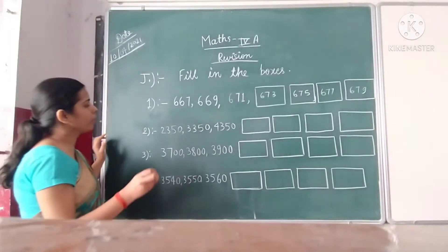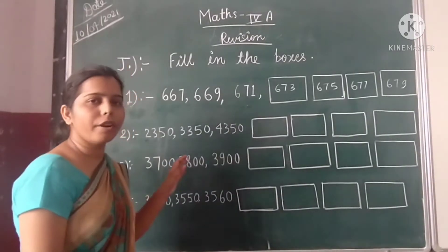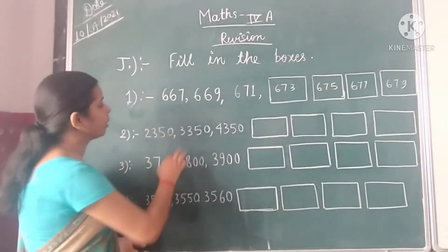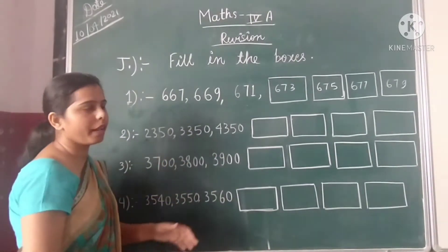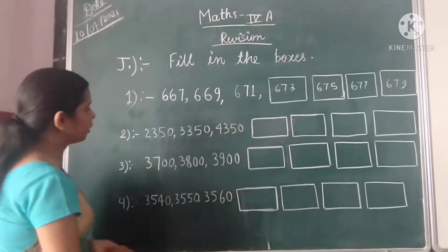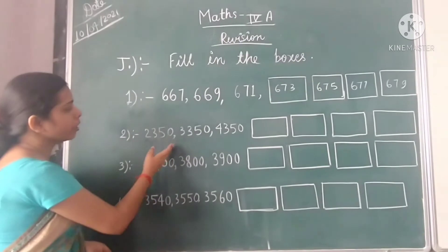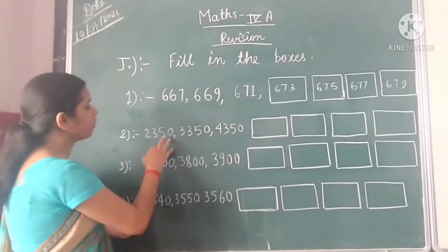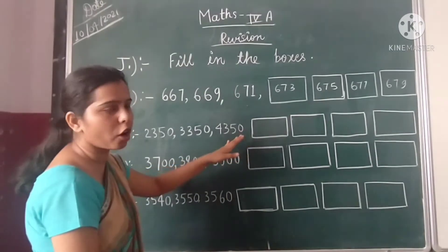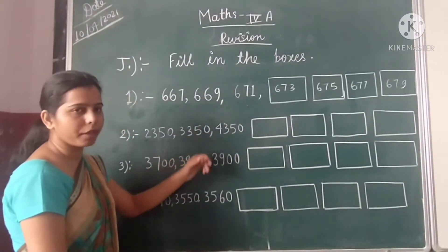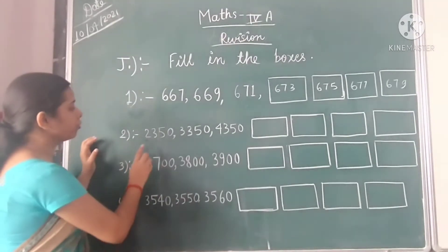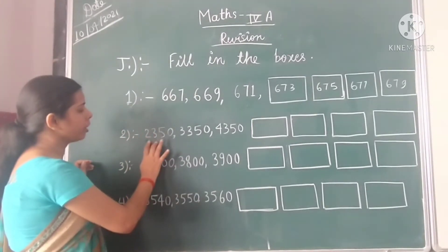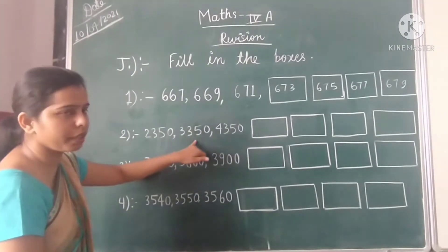In the second question, in this series: 2350, then X, then 3350, and the next number is 4350. What we observe? This is the increasing order of series, where when we add 1000 in our first number 2350, we get our next number 3350. Again, when we add 1000 in 3350, we get our next number 4350.